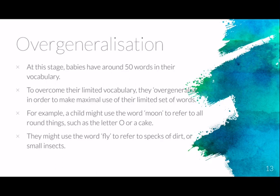To overcome the limitation of around 50 words, babies over-generalize — they use the same word to refer to many different things, making maximal use of their limited vocabulary. For example, a child might use the word 'moon' to refer to all round things, such as the letter O or a cake. Similarly, they might use 'fly' to refer to specks of dirt or small insects. You need to make sure you have over-generalization in your notes.